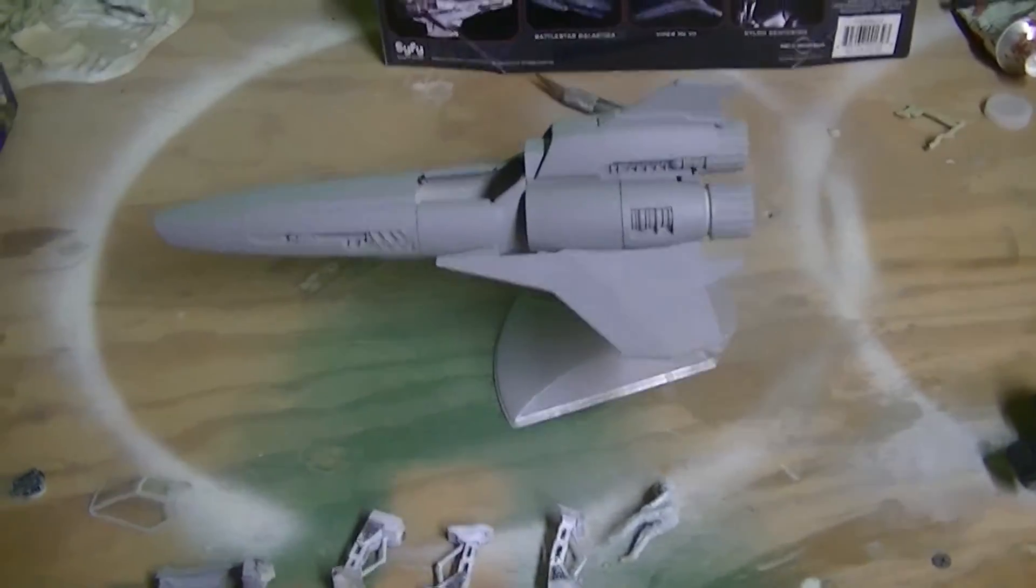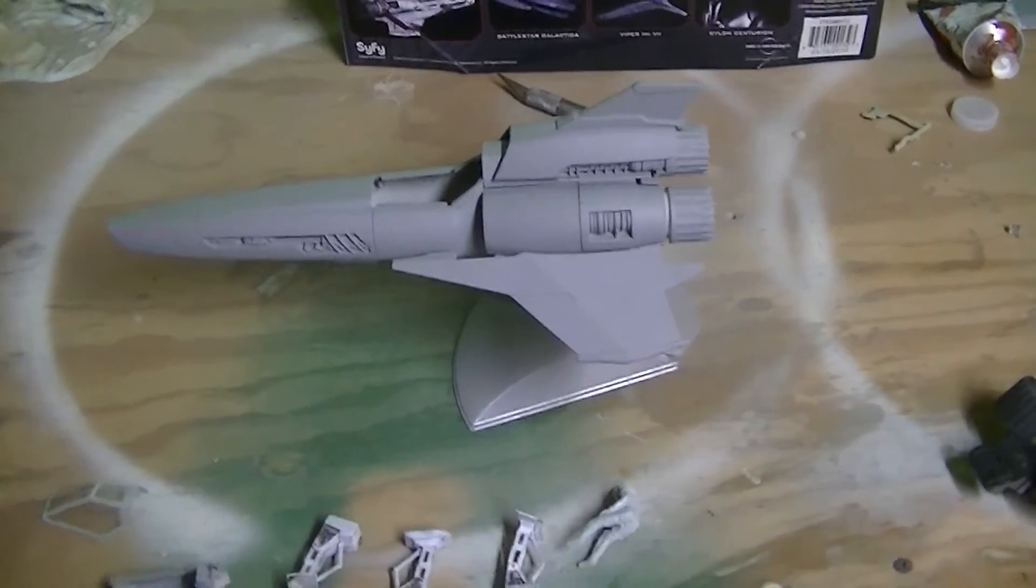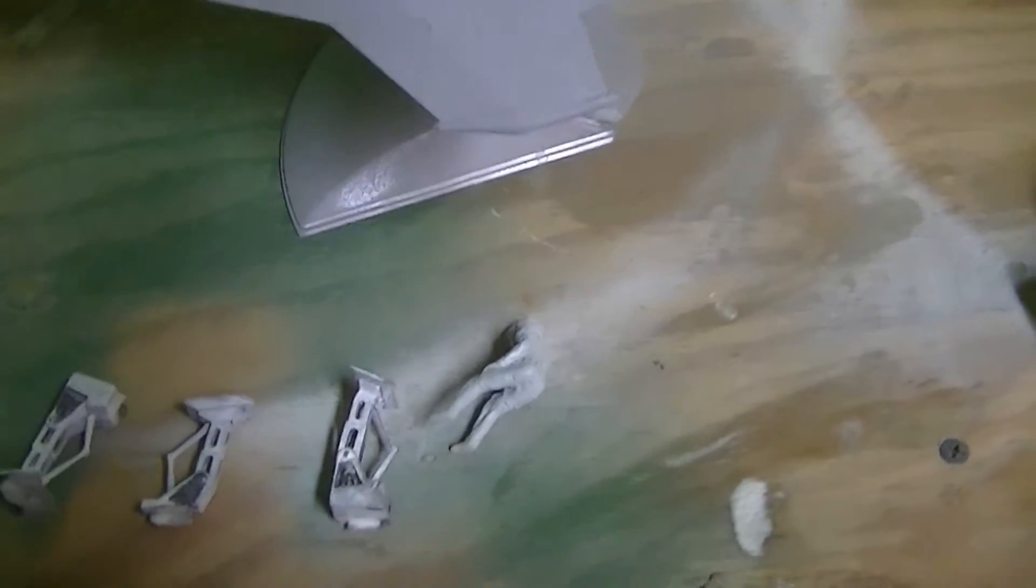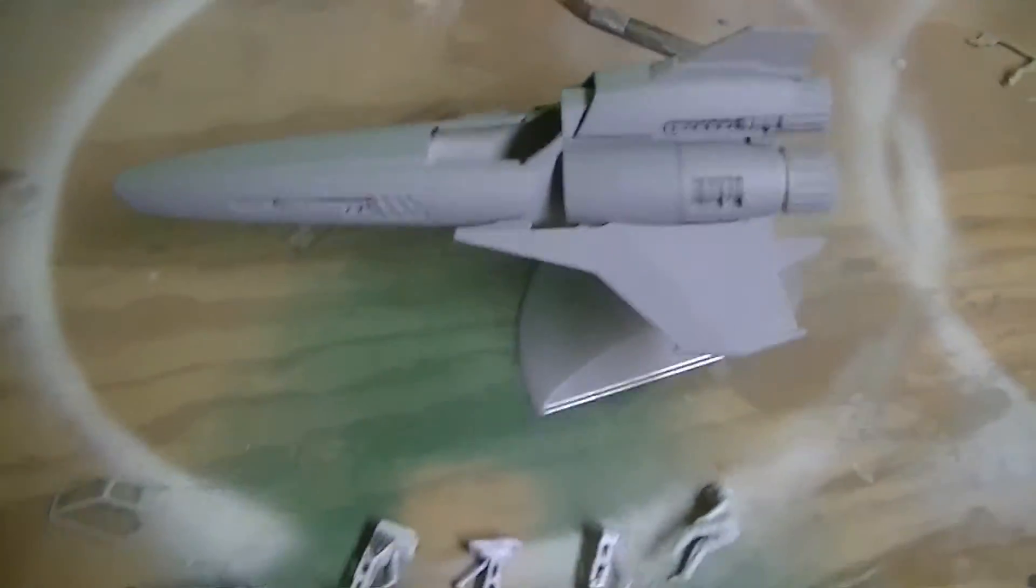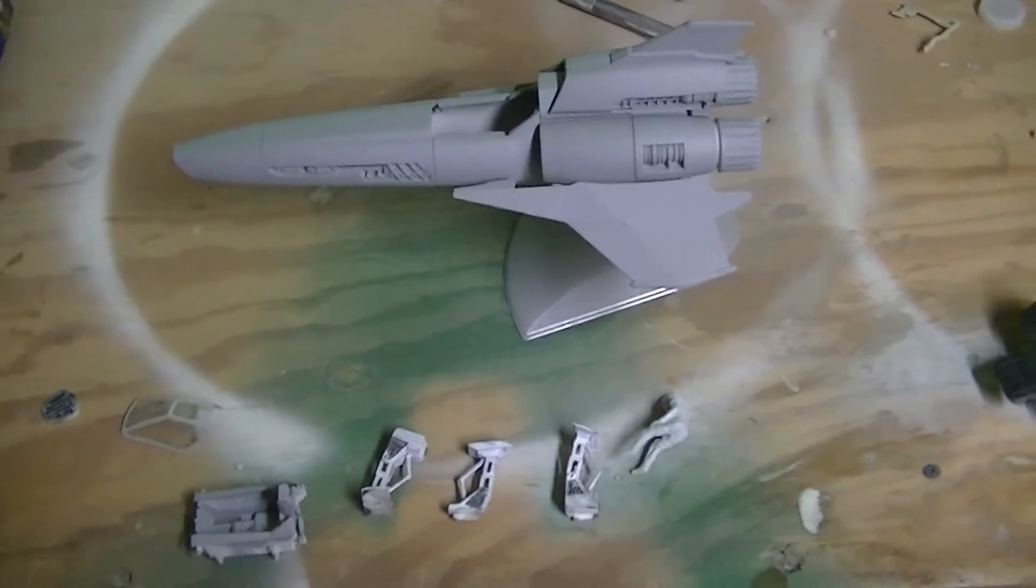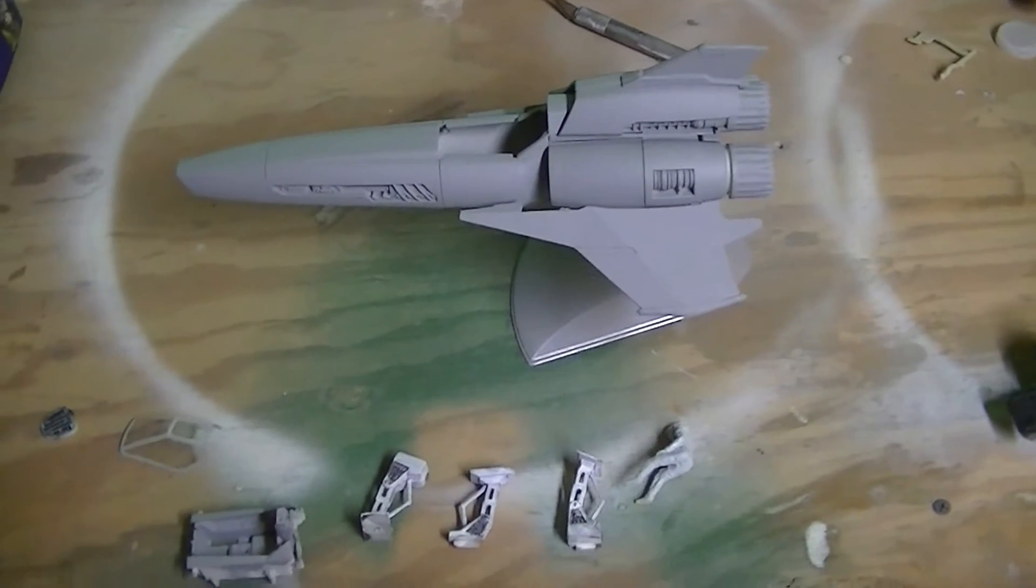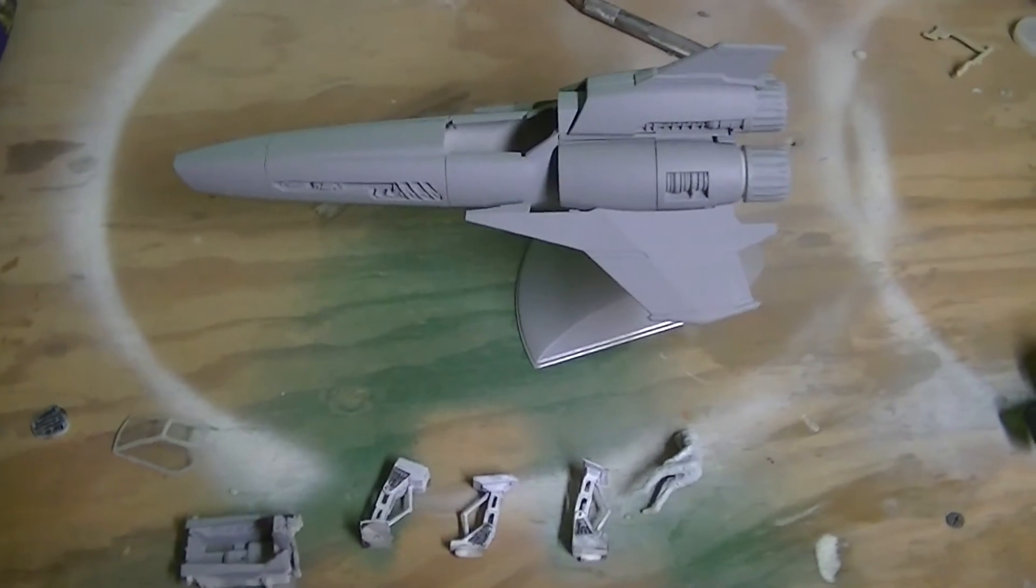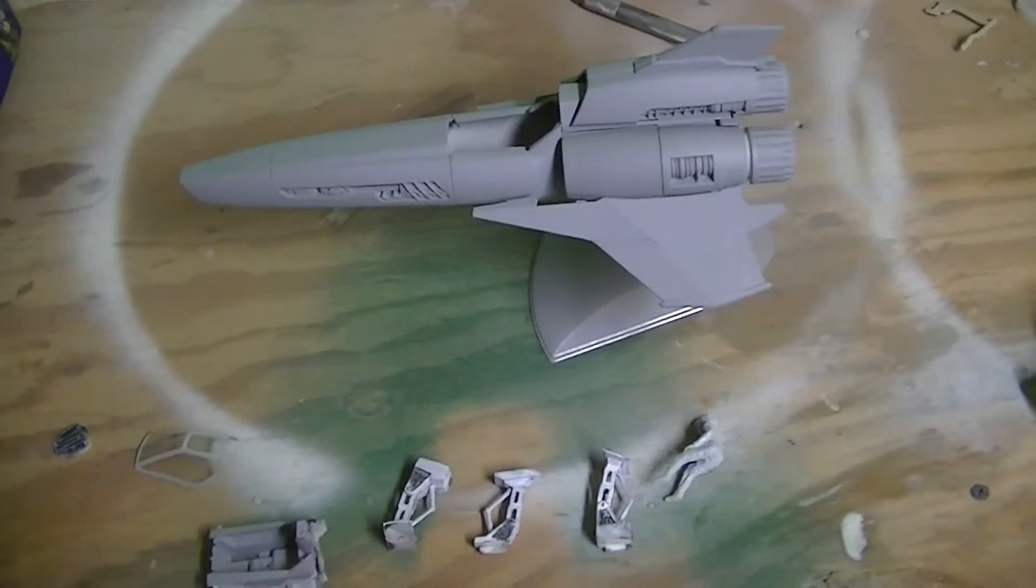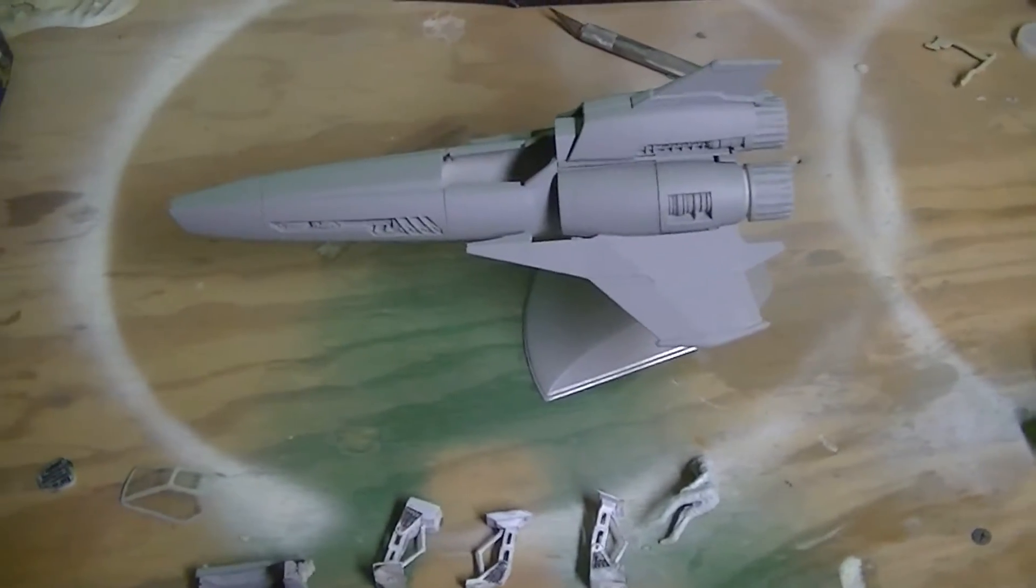We've covered the entire thing, top and bottom, with primer. Painted primer in the cockpit. Assembled and painted the details on the landing gear. Primed the pilot and got everything looking nice and smooth. So here's what we're going to do. We're going to shoot everything with a coat of flat white and come back and start assembling and detailing this great and wonderful Mobius Models Mark II Viper.